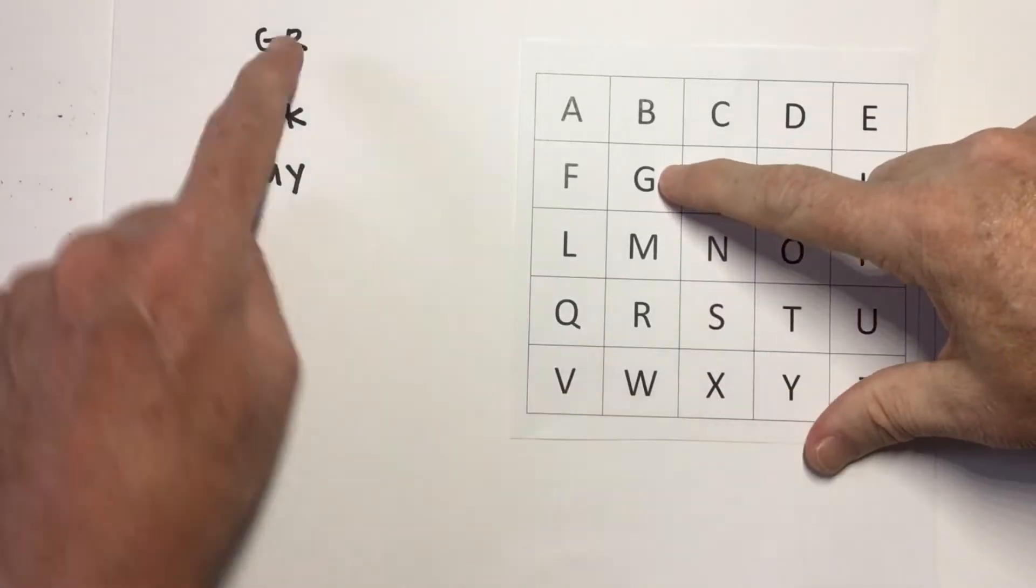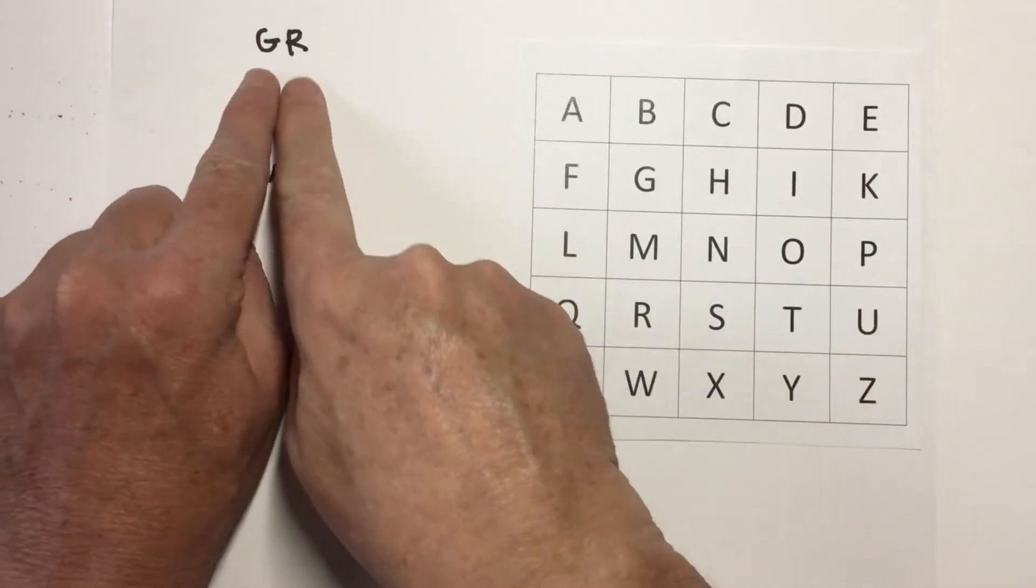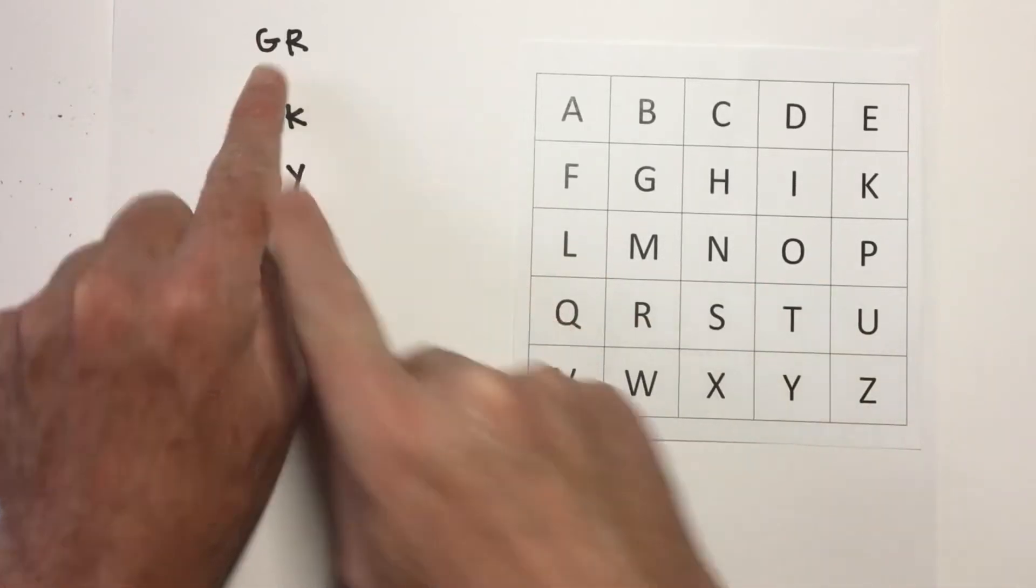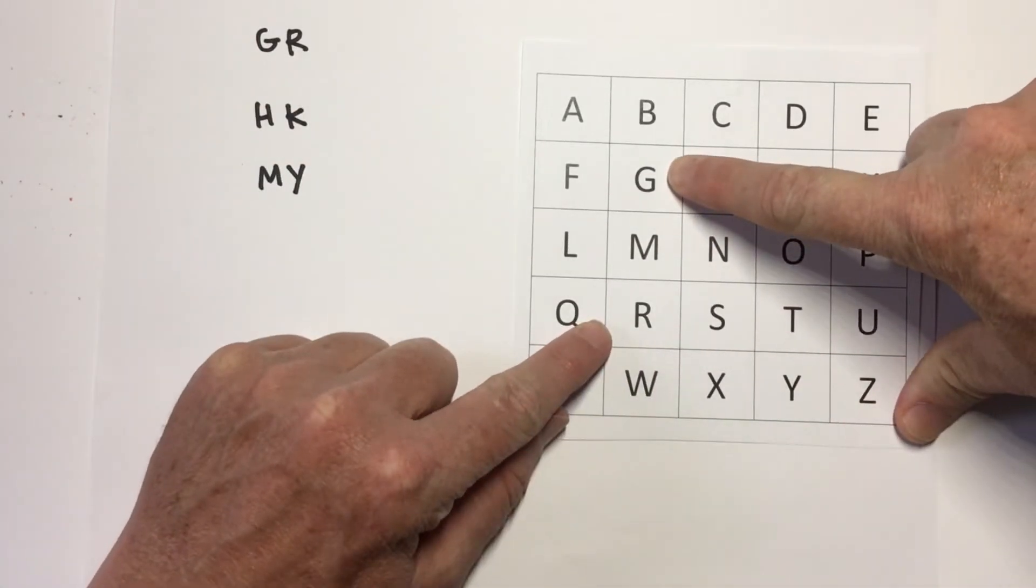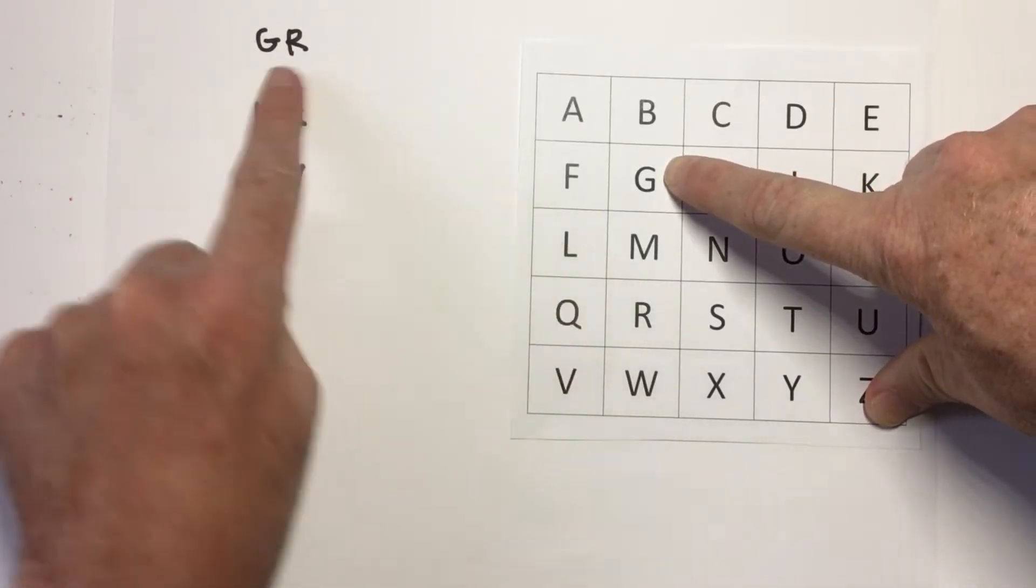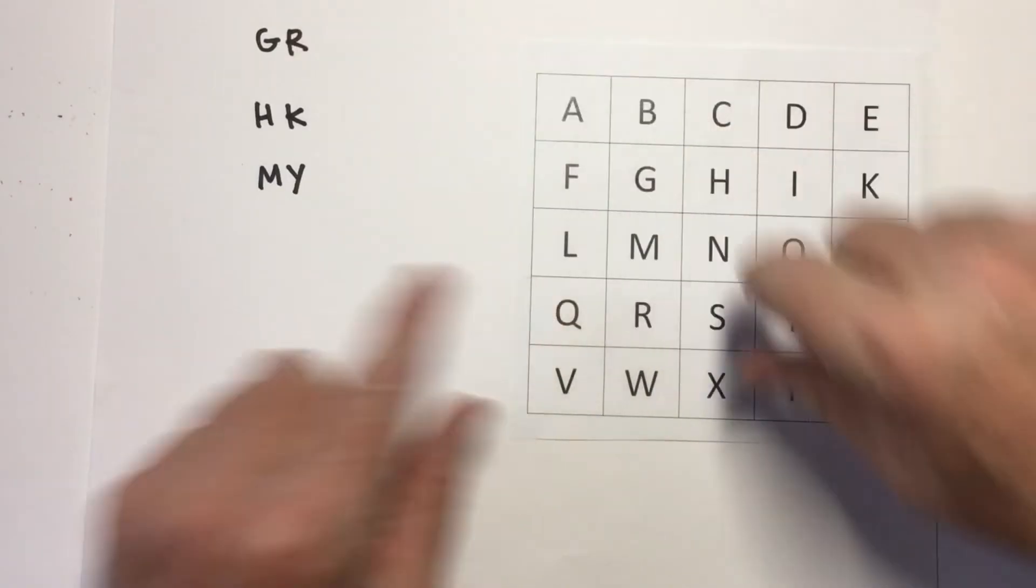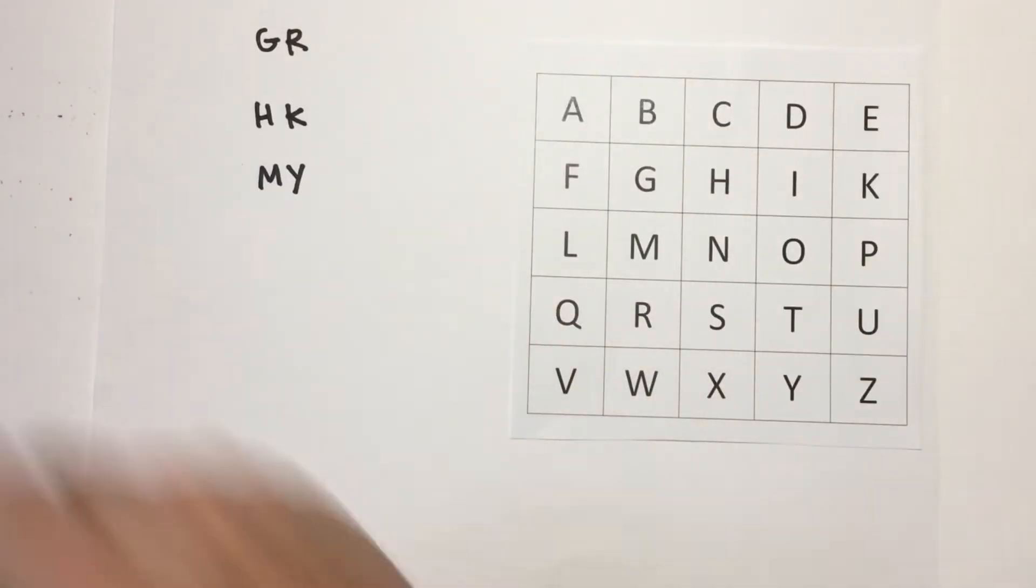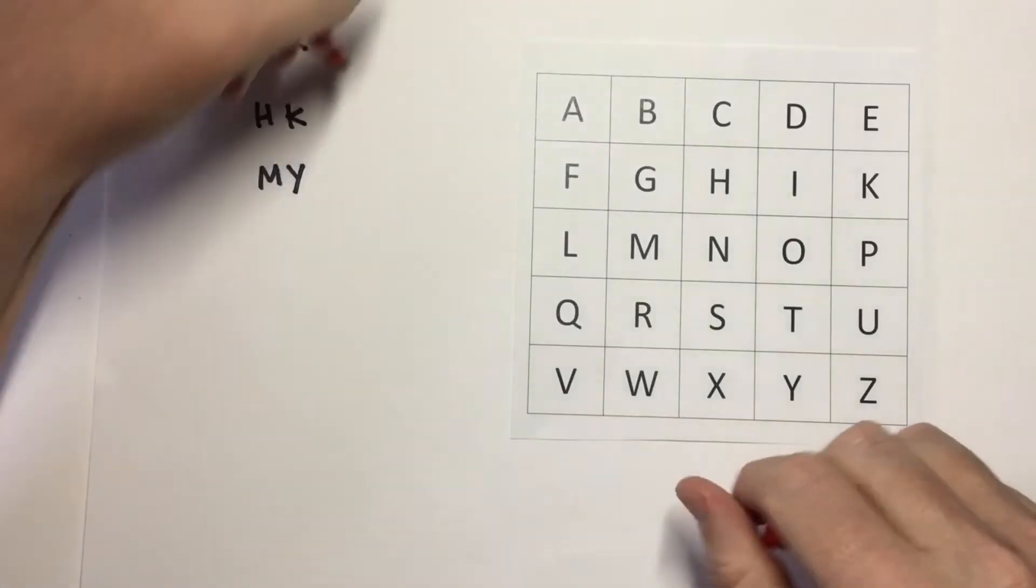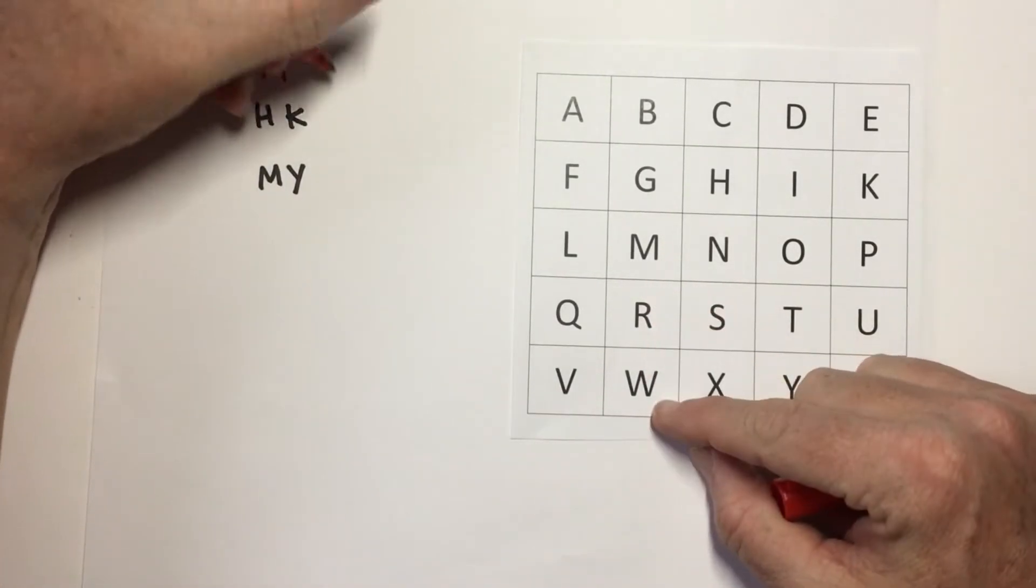So, let's look at GR. GR are in the same column. So, if I want to encode the letters GR, I find them on the grid. When I discover they're in the same column, what I do is I replace for the coded message the letter that's directly below the letter I'm interested in. So, G would become M, and R would become W.